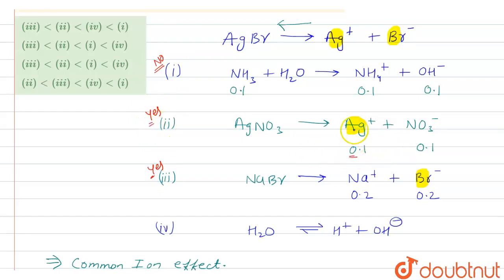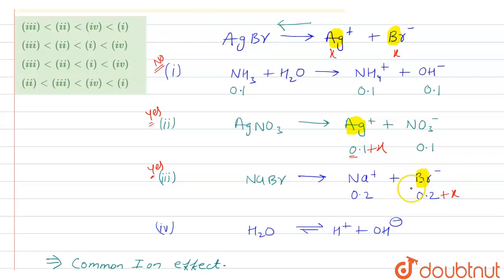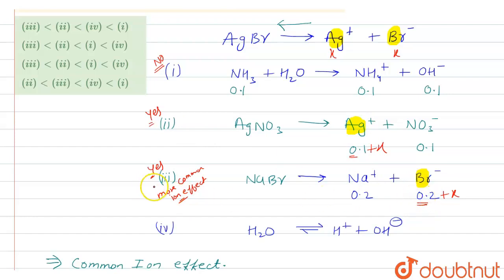Comparing options 2 and 3: in option 2 (AgNO₃) the Ag⁺ concentration increases by 0.1 + x, but in option 3 (NaBr) the Br⁻ concentration increases by 0.2 + x. Since the Br⁻ concentration in option 3 is higher than the Ag⁺ concentration in option 2, option 3 induces more common ion effect. Therefore solubility in option 3 is less than in option 2, which is less than in option 1.